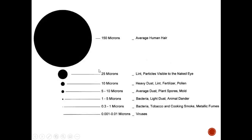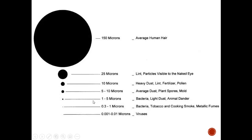This slide puts micron size into perspective. The average human hair is 150 microns. Regarding the COVID debate, the virus itself is 0.001 to 0.01 microns. The common argument is that wearing a mask is like keeping mosquitoes out of a chain-link fence—but that misses a big point: most droplet sizes, which carry the virus, are three to five microns, and masks do keep three to five micron particles out.